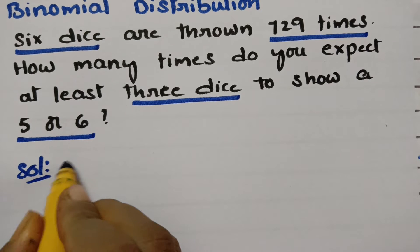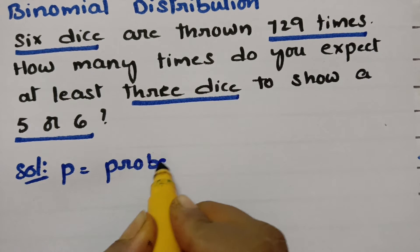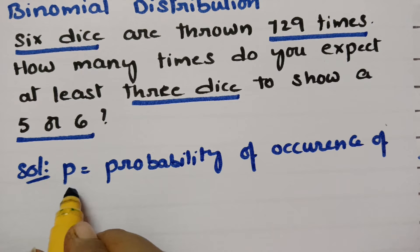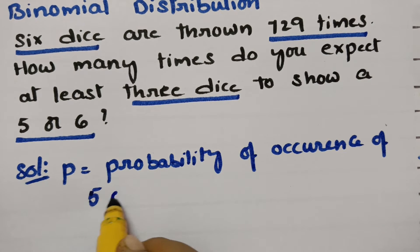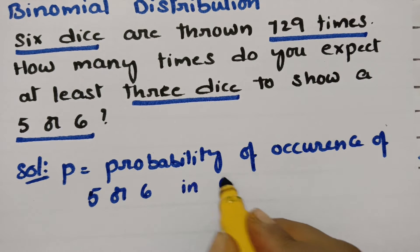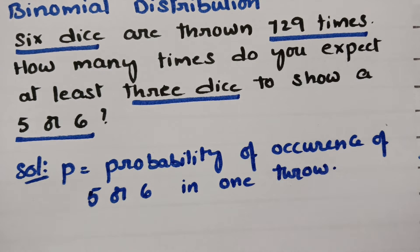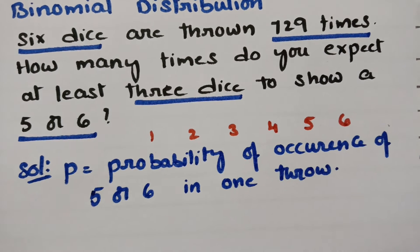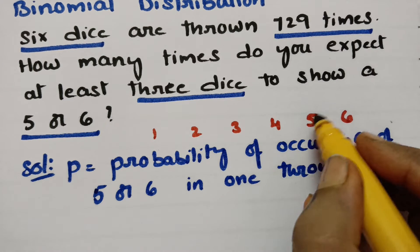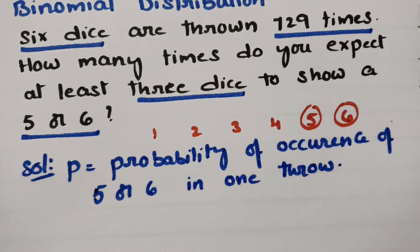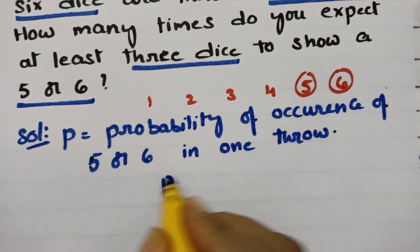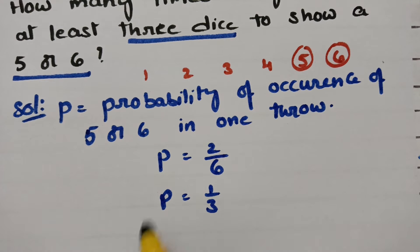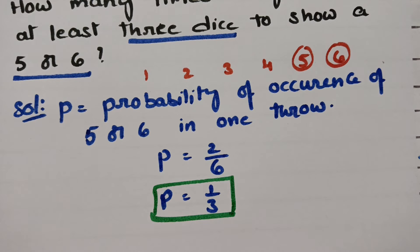First we need to find P, the probability of success — which is the probability of occurrence of 5 or 6 in one throw. On a die there are 6 faces with values 1 through 6. So the probability of getting 5 or 6 is 2 by 6, which simplifies to 1 by 3. Therefore P = 1/3.